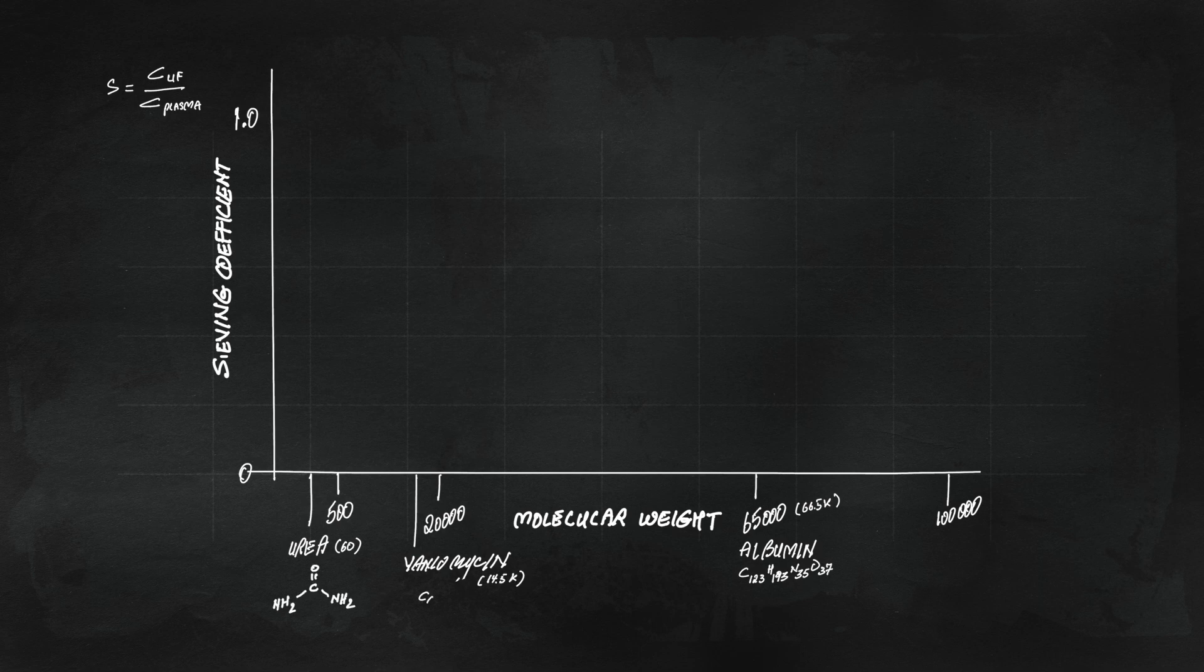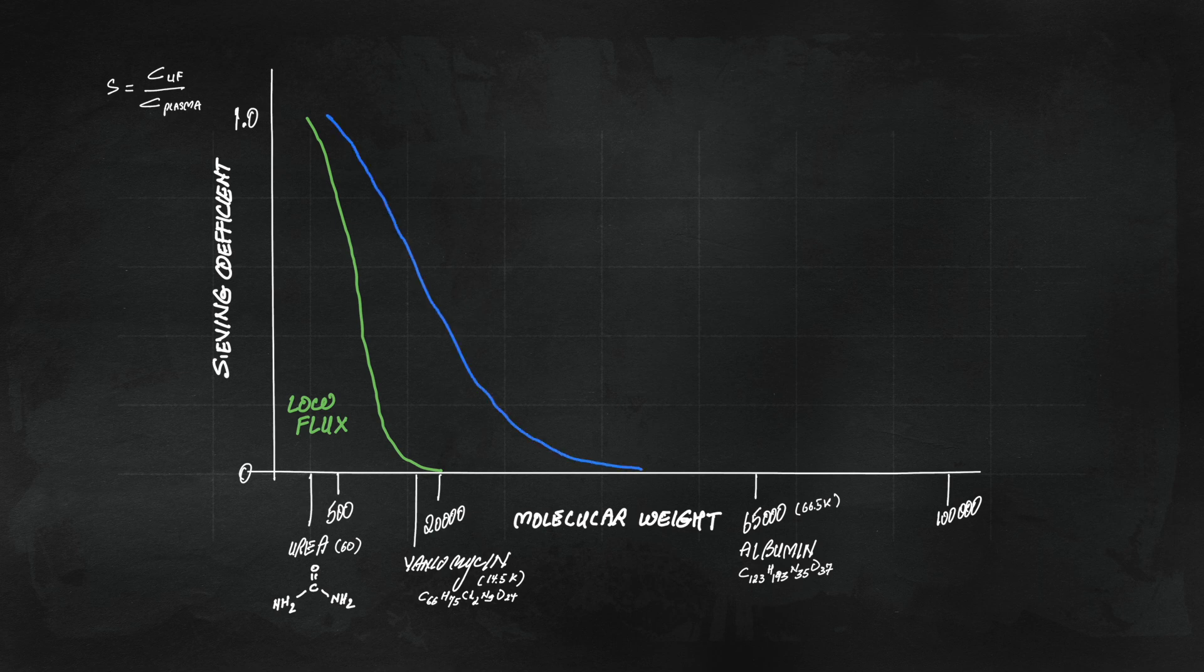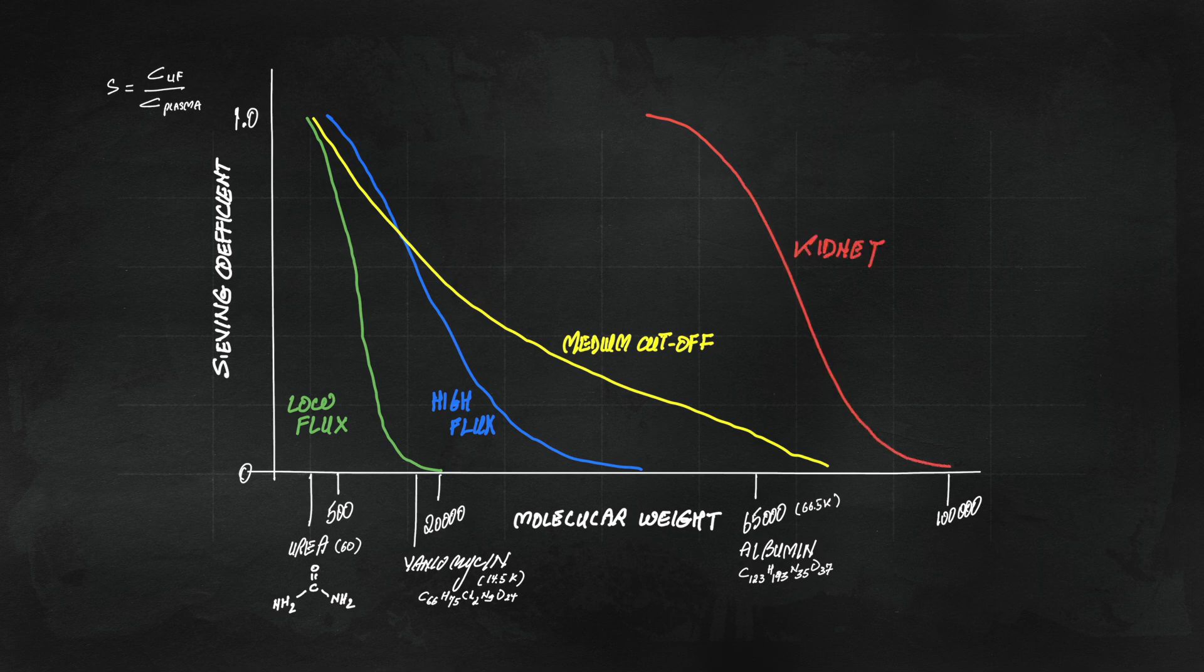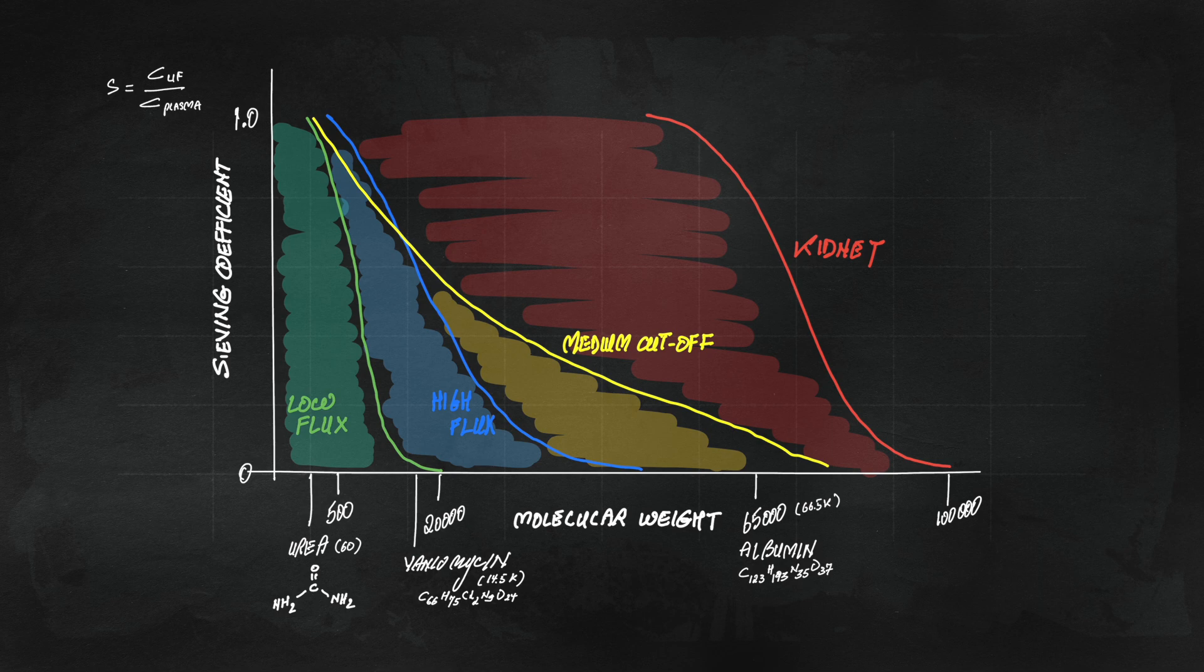Low-flux dialysers are good for small solute clearance but not so much for metamolecules. The newer medium cutoff dialysers expand on the high flux in their ability to clear metamolecules but still fall short of what a native kidney does, especially when you factor in the dynamic nature of solute handling with a la carte use of secretion and absorption of essential solutes as needed.